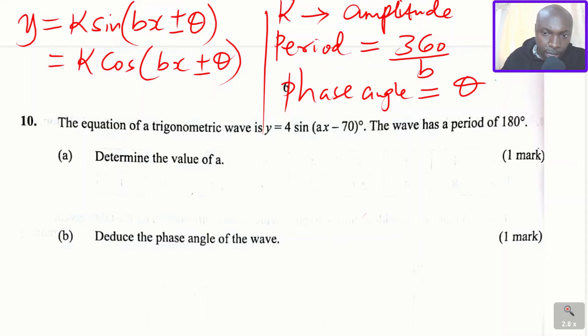Let's go to the question. Having known that, look at the equation here and compare the equation that we have: y equals 4 sine of ax minus 70 degrees. So what is the value of A? When you look at the value of A, it is equivalent to b that we have in the other equation.